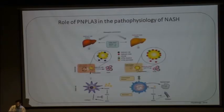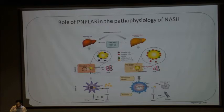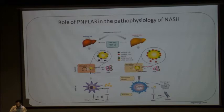This shows the pathophysiology with PNPLA3 polymorphism in the pathogenesis of NASH. There is expression of PNPLA3 which binds to CGI-58, leading to inactivation of the adipose triglyceride lipase enzyme, causing decreased lipolysis and increased accumulation of lipids in the hepatocyte. Similarly, there is decreased release of retinol, which predisposes hepatic stellate cells to myofibroblast transformation, leading to increased collagen formation.